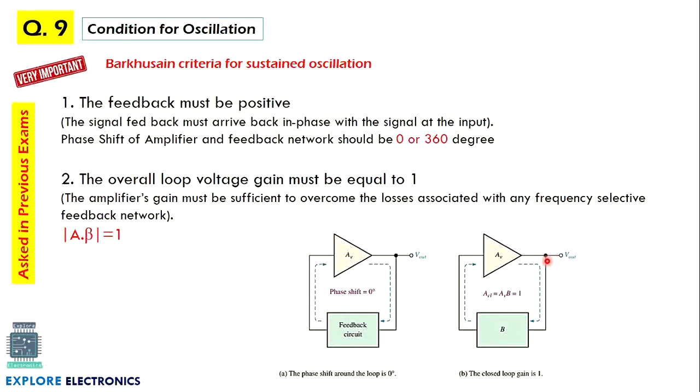And then condition for oscillation. This is a Barkhausen criteria. Barkhausen has made two criteria for sustained oscillation. This will be asked many times in exam, where the phase shift around the loop if you connect a positive feedback with an amplifier circuit. If we take the total phase shift, it should be 0 degree or 360 degree. The overall gain of the circuit should be equal to 1, means amplifier gain is Av and the feedback factor is beta or B. The total gain should be equal to 1. This is the Barkhausen criteria.